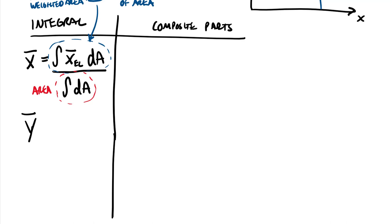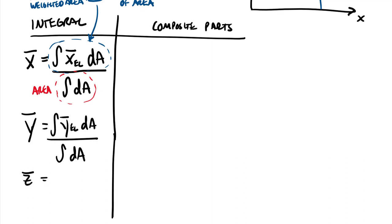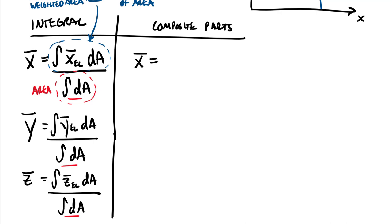The y-bar centroidal distance in integral form equals the integral of y-bar of the element times dA, divided by the integral of dA. Then z-bar equals the integral of z-bar of the element times dA, divided by the integral of dA. Note that all three share the same area in the denominator, so you only need to compute the total area once. The version we'll use is for discrete composite parts, using summations instead of integrals.